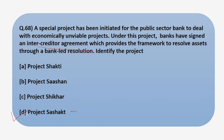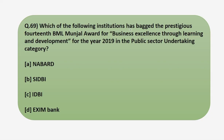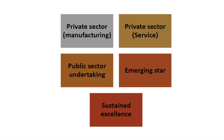Moving back to the question: the answer is Project Sashakt, option D, as its aim is to address the bad loan problem in India's banking sector and includes an inter-creditor agreement wherein the lead bank initiates the resolution plan. Now moving on to the next question: which institution has backed the prestigious 14th BML Munjal Award for Business Excellence through Learning and Development for the year 2019 in the Public Sector Undertaking category?